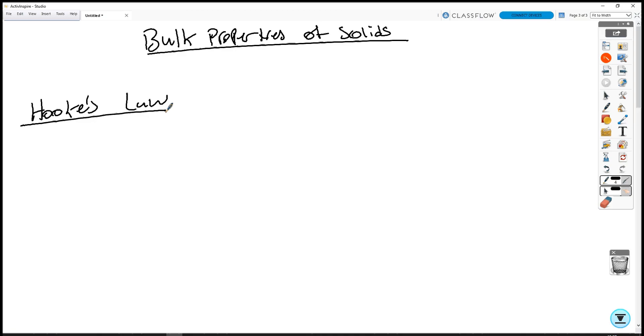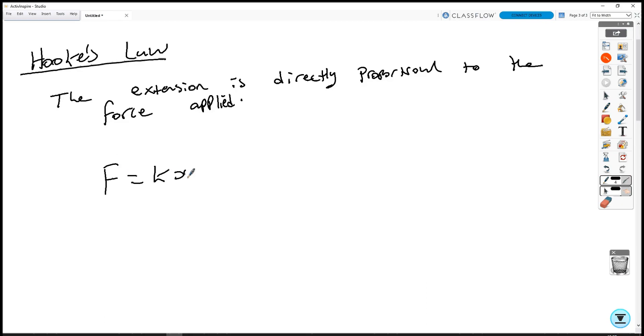Hooke's Law applies to extension of materials, usually springs or wires. Hooke's Law says that the extension is directly proportional to the force applied. This is given by the equation F equals Kx, where F is force in Newtons. K is the spring constant, measured in Newtons per meter. And X is the extension, measured in meters.